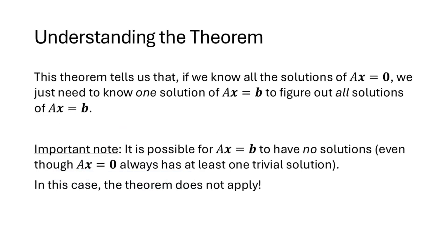This theorem tells us that if we know all the solutions of Ax equals 0 — and we learned how to find those in the previous lecture — then all we need is just one solution of Ax equals b to determine all solutions of Ax equals b. However, it's important to note that while Ax equals 0 always has at least one solution, namely x equals 0, it's possible for Ax equals b to have no solutions. For this theorem to work, we need at least one solution of Ax equals b. If Ax equals b is inconsistent, the theorem doesn't apply.